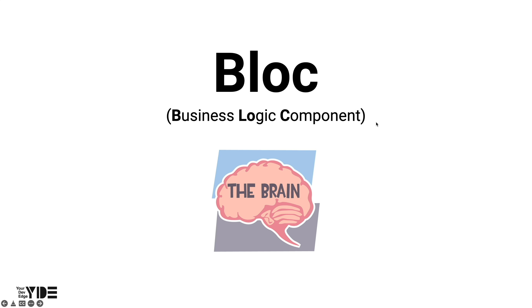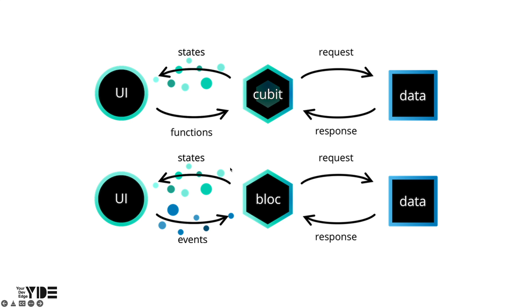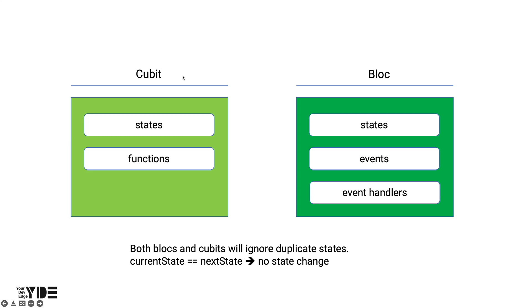The Bloc Overview section covers general information about Bloc 8.0 and later versions. Bloc is an abbreviation for Business Logic Component — you can think of it as the brain of the app. There are two ways to implement Bloc: Cubit and Bloc. To do state management using Cubit, define the state and implement a public function that can change the state. For Bloc, define state and event, and implement an event handler that can change state. Some people are reluctant to use Bloc because they need to define and handle events additionally, but you can experience that handling events is not too cumbersome through this tutorial.